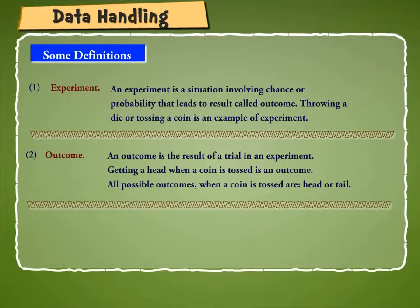Outcome: An outcome is the result of a trial in an experiment. Getting a head when a coin is tossed is an outcome. All possible outcomes when a coin is tossed are head or tail.